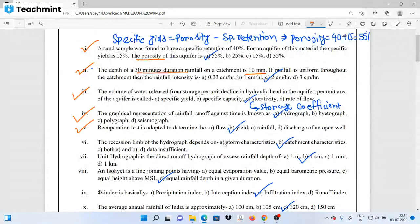Next, the recuperation test is a type of constant head pumping test. The recession limb of the hydrograph depends on the catchment characteristics. You can see the videos in the description box for more details on these topics.